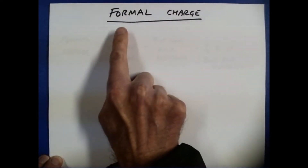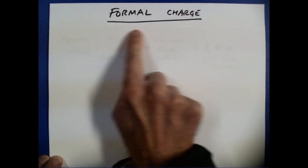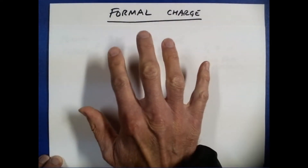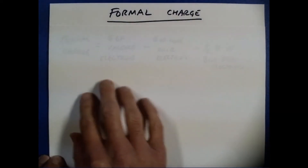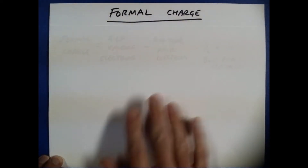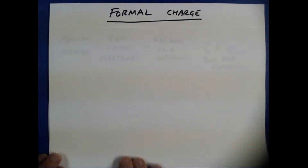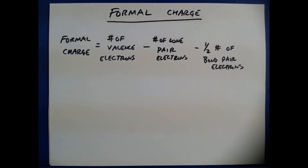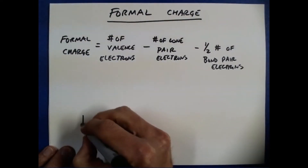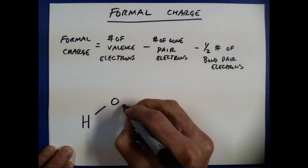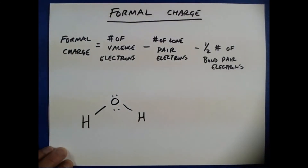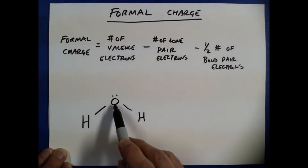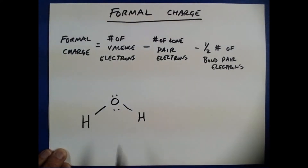In this video, we're going to cover the topic of formal charge. Formal charge is a way of helping us determine which of different Lewis structures that we can write are better. There's a way to calculate formal charge for a particular atom in a Lewis structure. Let me just first draw a Lewis structure here — we'll draw a Lewis structure for water, and we're going to calculate the formal charge for oxygen in the water molecule.